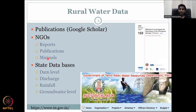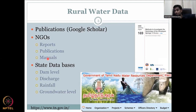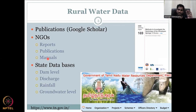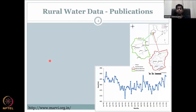Then there are state databases — a lot of data created for each state, some at the dam level. For example, we have irrigation projects that we covered in week 9. We looked at engineered infrastructure and how dams help. Now we need to know dam levels — how much discharge is left, how much water comes in, and what goes out — to create water budgets. These databases are created at state and dam level, with discharge, rainfall, and groundwater level data collected. They also do significant dissemination.